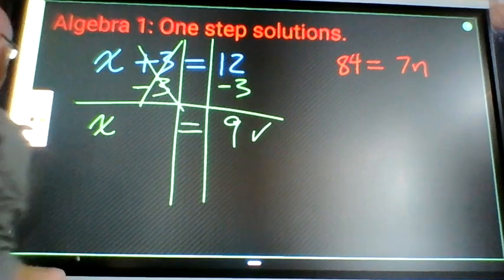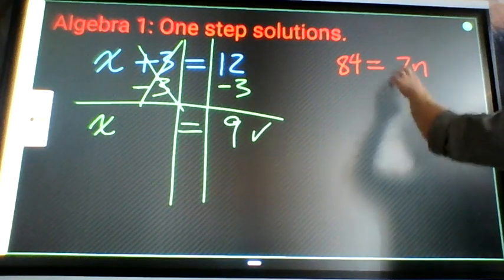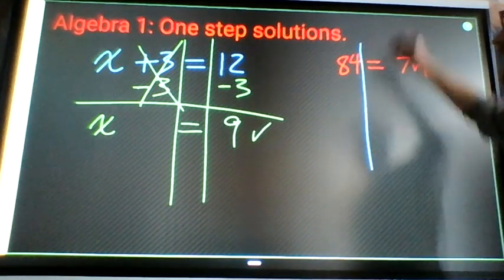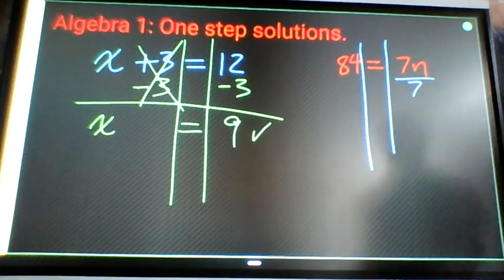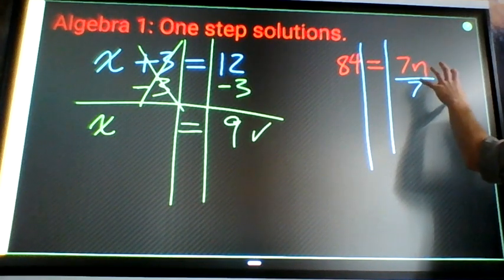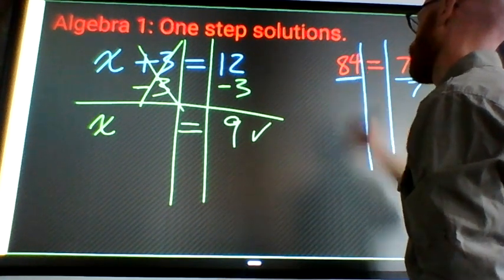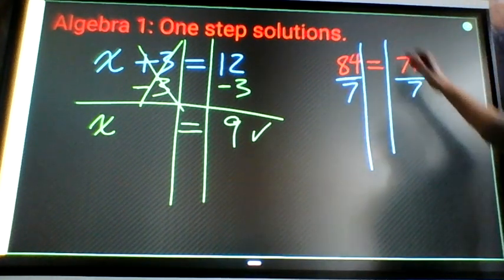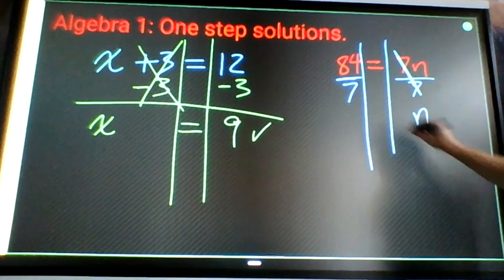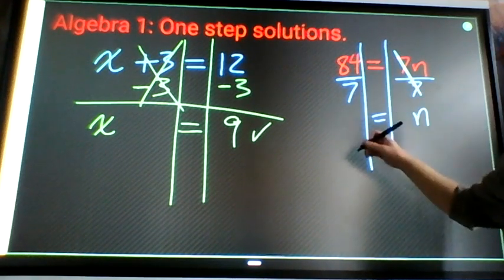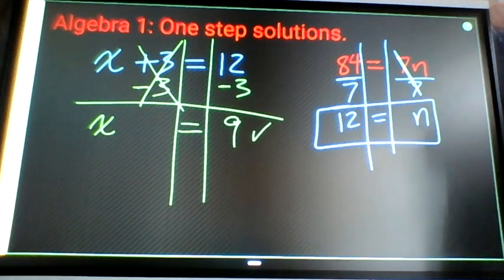Same idea over here. Where's the variable? Here. What's happening to the variable? Times 7. How do I undo that? The opposite, divide by 7. I'm making a value change on the right, I need to make the same value change on the left. One n is just n, equals 84 divided by 7 is 12. That's my solution, n equals 12.